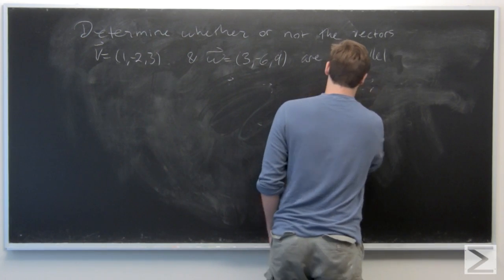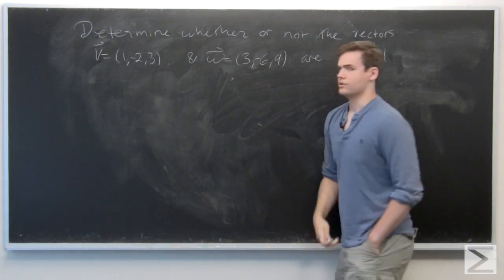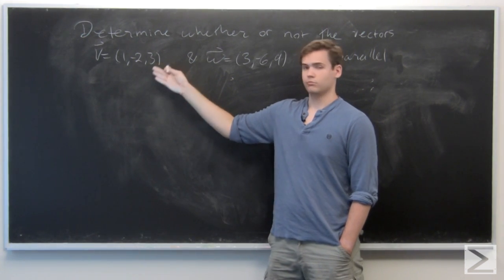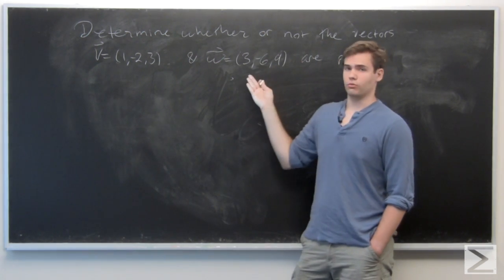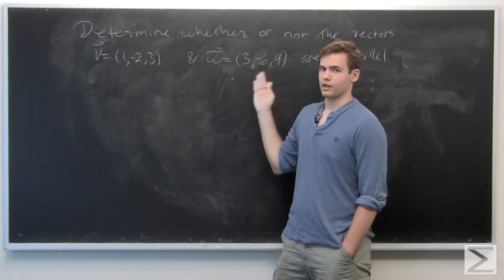So the problem at hand is the given vectors v which is 1, minus 2, 3, and then the vector 3, minus 6, 9.